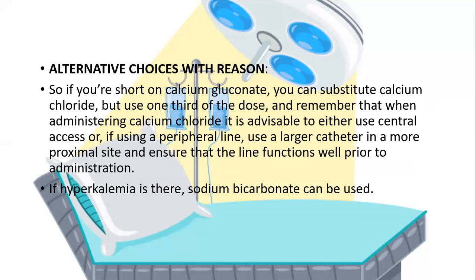Regarding alternative choices: if you are short on calcium gluconate, you can substitute calcium chloride, but use one third of the dose. When administering calcium chloride, it is advisable to either use a central line or, using a peripheral line, use a larger catheter at a more proximal site and ensure the line is functioning well prior to administration. If hyperkalemia is present, sodium bicarbonate can be used.